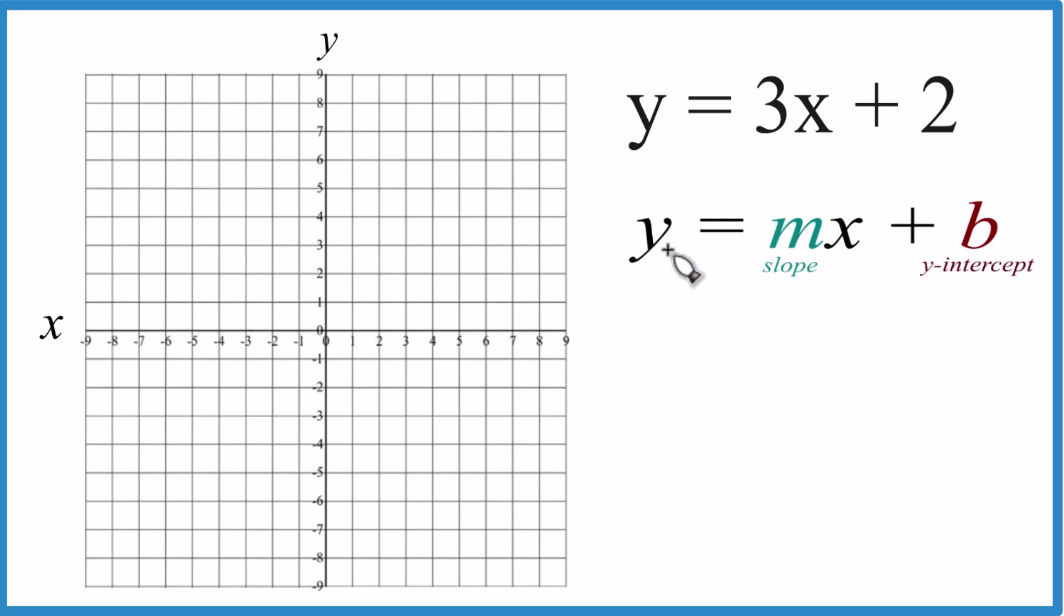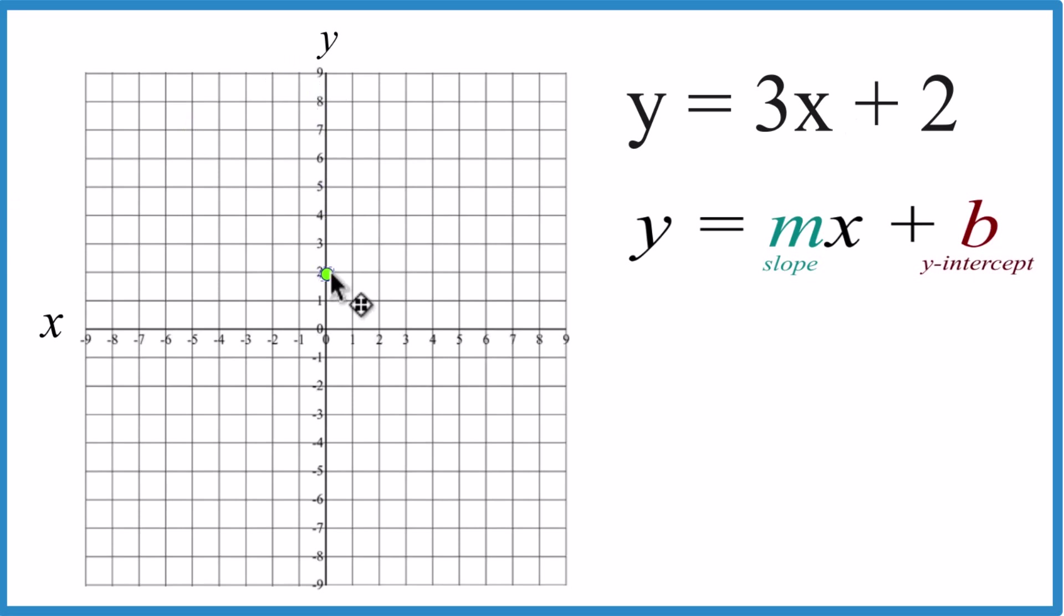So y equals 3x plus 2. We have y equals mx plus b, and b is the y-intercept, and that is the 2. So what we'll do is we'll go to the y-axis, and we'll go to 2, and that's where our graph is going to cross the y-axis here.